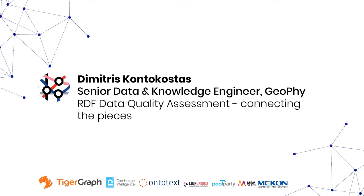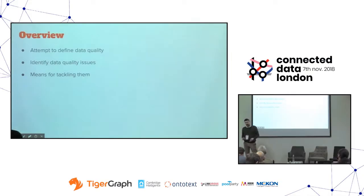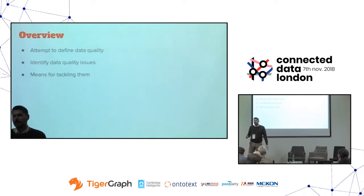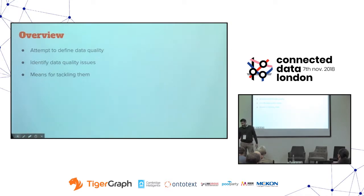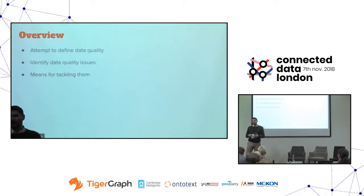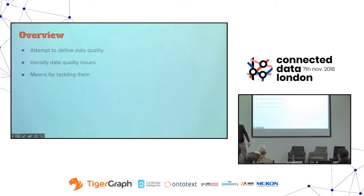What we're going to see today is three things. First, we're trying to identify what quality and data quality is. It's hard to define data quality, but we try to define it. And then we see how we can identify data quality issues and different ways we can actually tackle them.